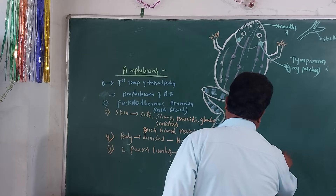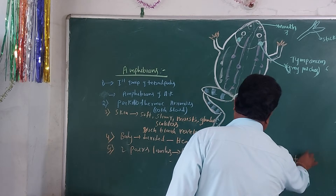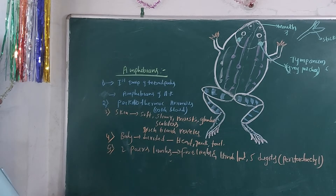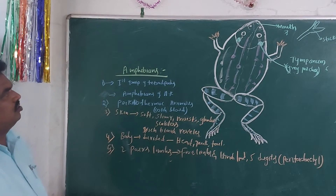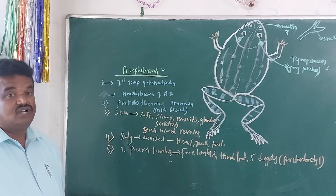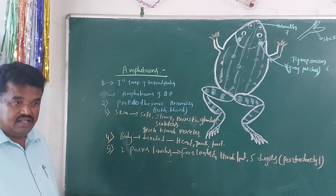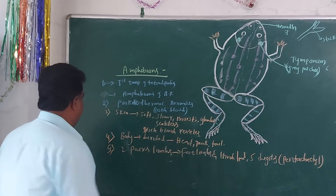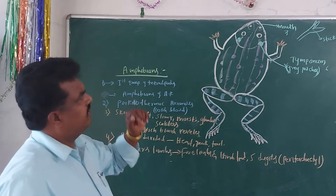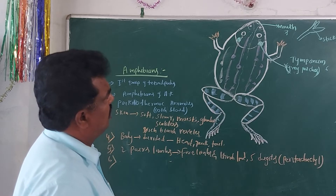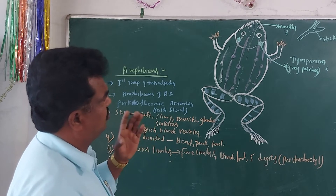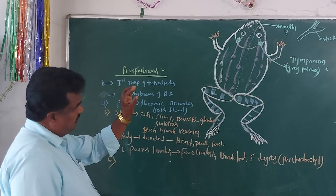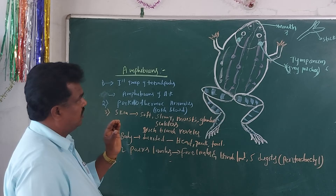The hind limbs are elongated, which is helpful for swimming, jumping, and leaping. The head is triangular in shape. The mouth is present on the head and it is very large.